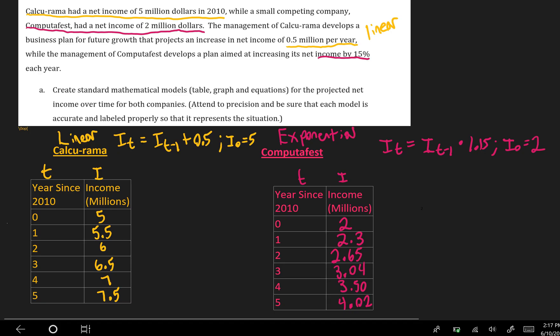So let's write explicit rules now for these situations. So my explicit rule is going to be i of t equals 0.5t, because we're growing by 0.5 every time, plus the 5 that we started with. And that's the rule that I'm going to want to graph to create a comparison. And then over here for computafest, it's going to be i of t equals 2, where we started, multiplying by 1.15, the common ratio, raised to the t power, because that's exponential growth.